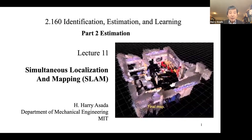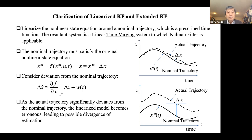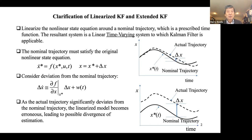This is 2160, lecture 11 on simultaneous localization and mapping, or SLAM. So far we discussed various types of Kalman filters — discrete time, continuous time, extended Kalman filter, unscented Kalman filter, and last time we looked at Bayes filters. Today's lecture is a little unique because I want to slow down and talk about the application side.